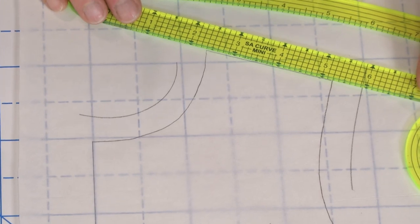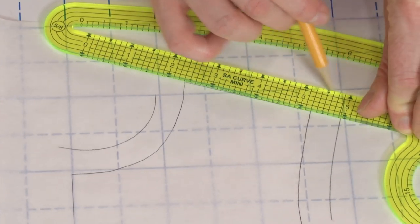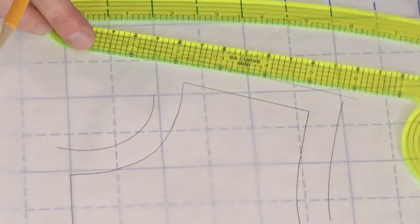With the pattern traced and seam allowances added, you'll have a quality pattern for a fraction of what it would cost if bought separately.